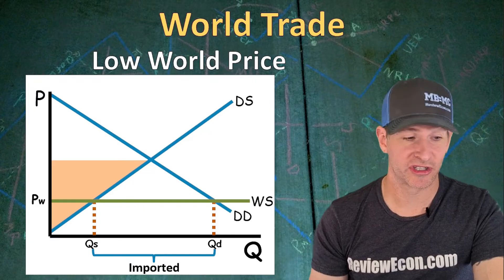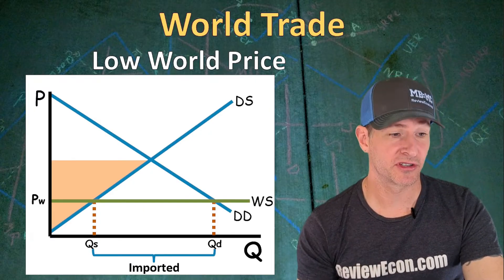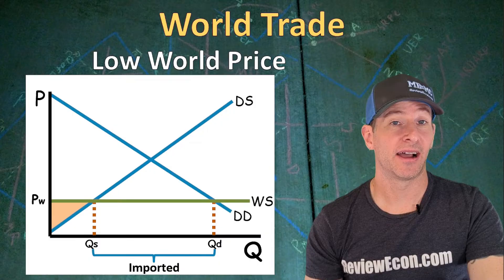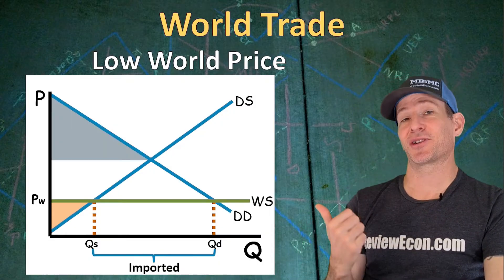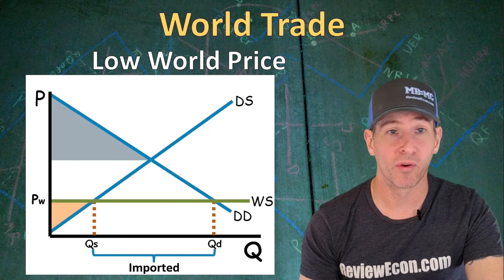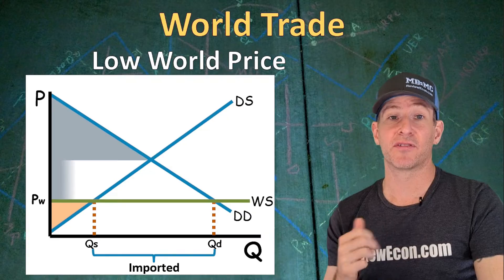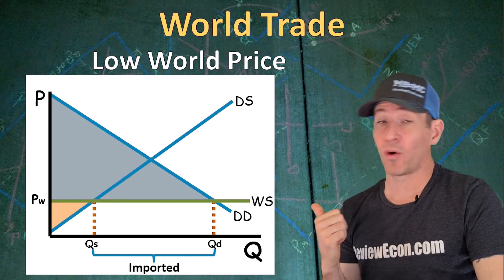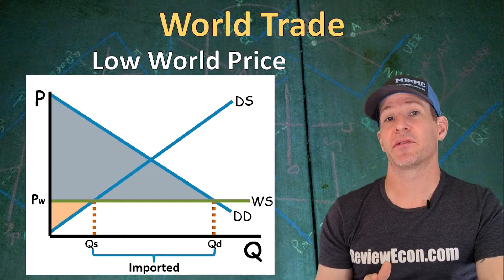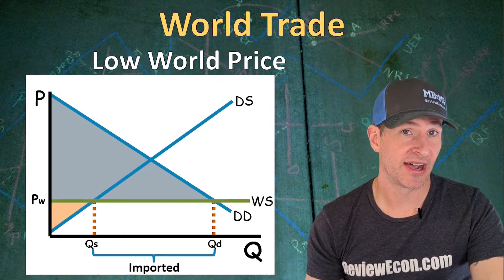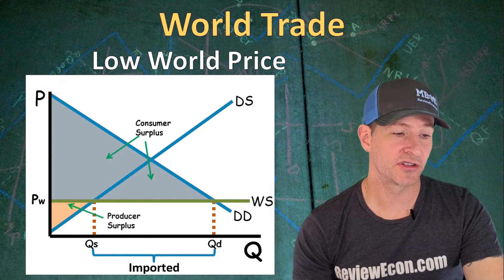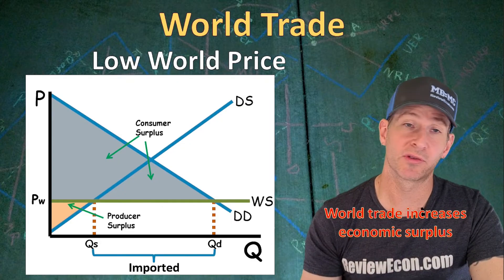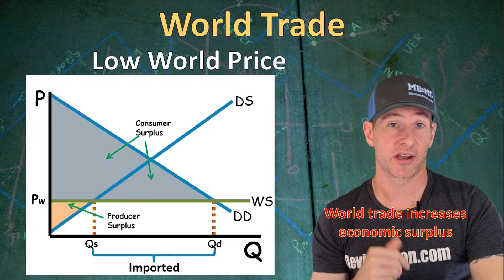Now let's look at how that impacts producer and consumer surplus. Producer surplus has shrunk to a smaller triangle because of the lower world price and lower domestically produced quantity. Consumer surplus, on the other hand, was a smaller triangle before, but now at the lower world price we get more consumer surplus — it extends all the way to QD. If there were numbers, we could calculate the areas of the producer and consumer surplus. So while producers are worse off, we see greater economic surplus as a result of trade when the world price is lower than the domestic price.